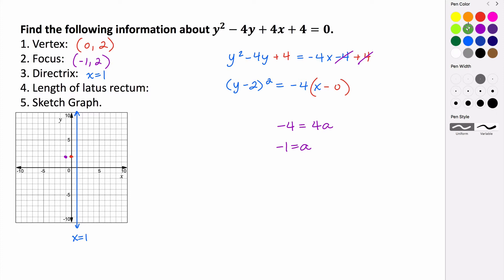The length of our latus rectum is just 4 times the absolute value of a. Since a is 1, or negative 1, its absolute value is 1. The length of the latus rectum is 4 units.